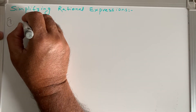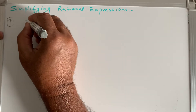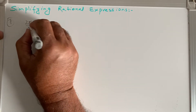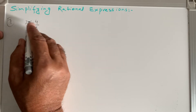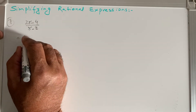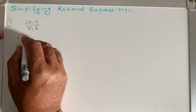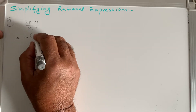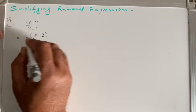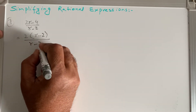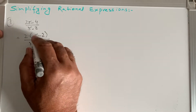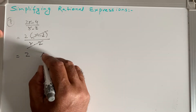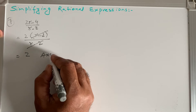Question 7: (2r - 4) / (r - 2). We factor the numerator by taking 2 as a common factor: 2(r - 2). Then (r - 2) in the numerator cancels with (r - 2) in the denominator. The answer is 2.